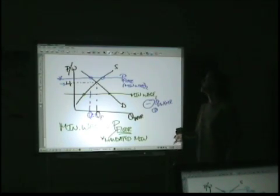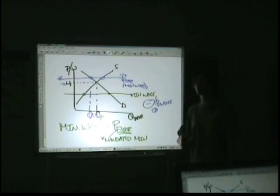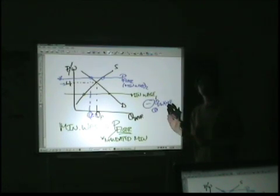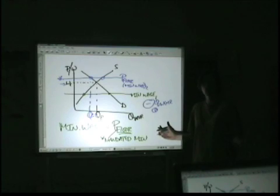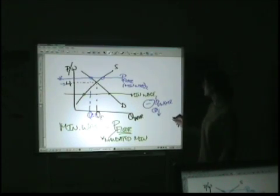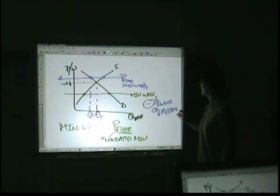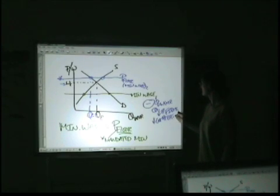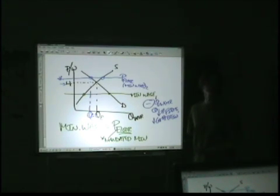Number two: if businesses do not have the flexibility to employ fewer workers — for example, if they're dealing with a more vertical demand curve for labor and they can't pay the workers but have to have workers to stay in business — they're going to go out of business. What's going to happen is you have fewer firms, a lesser number of firms, which also means less competition in product markets, and that's not necessarily a good thing for the consumer.